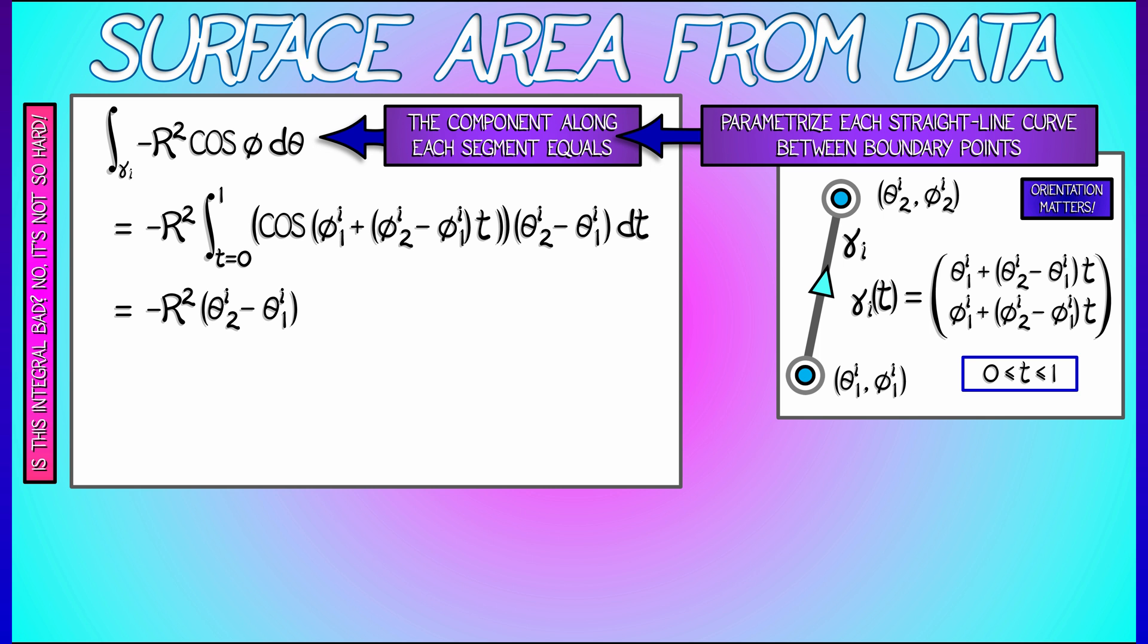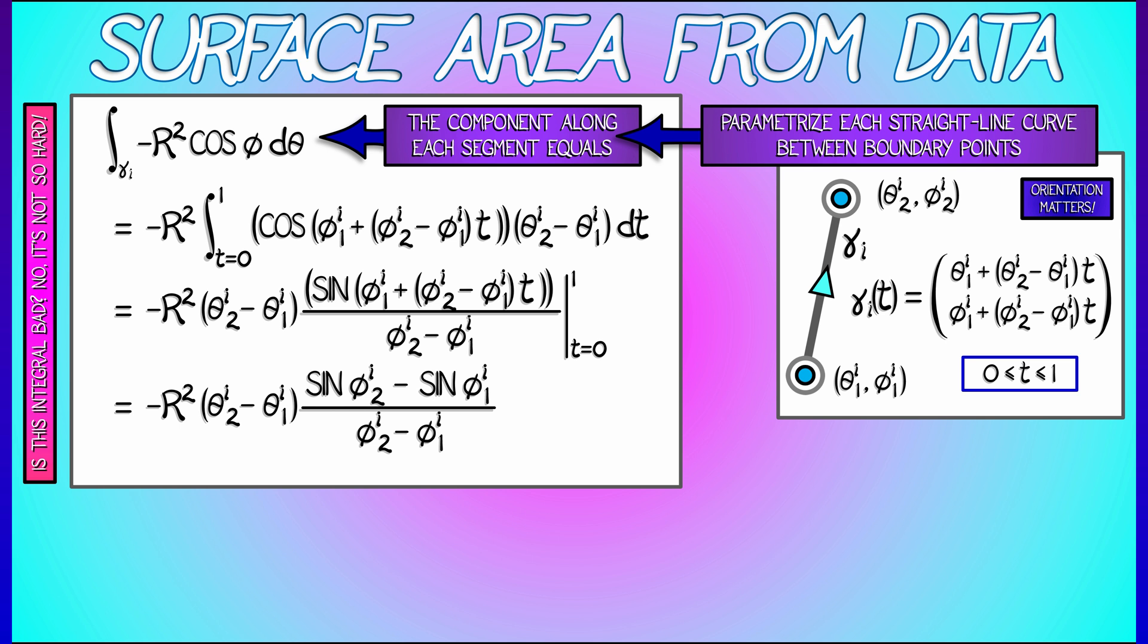We're integrating with respect to t. So how do we do that? It kind of looks ugly, but look, we're integrating cosine of something times t. So that integral is really going to be sine of that argument divided by the derivative of that with respect to t, that derivative being φ₂ minus φ₁. Evaluating this as t goes from 0 to 1 gives us a nice answer. It's minus R² times θ₂ minus θ₁ times sin φ₂ minus sin φ₁, all divided by φ₂ minus φ₁.